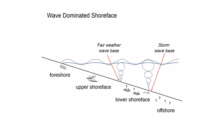Before looking at more outcrop photos, let's establish consistent terminology for a wave-dominated shoreface — a shallow marine succession dominated by wave processes. The solid blue line shows wave height during fair-weather conditions; the broken blue line shows wave height during storm conditions. The fair-weather wave base is in a much more landward position than the storm wave base.